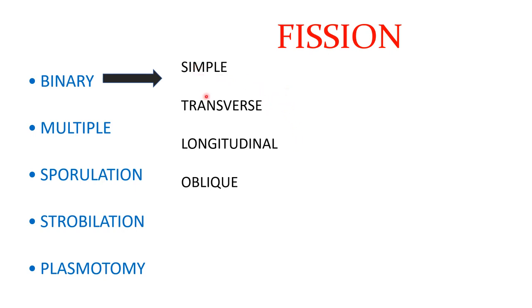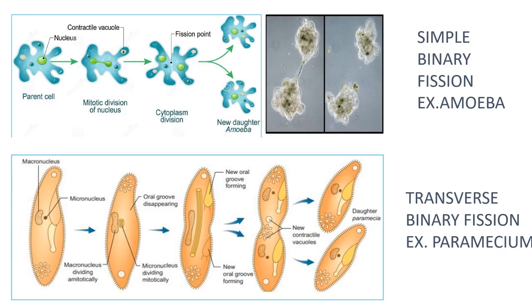The four main types of binary fission are: simple binary fission, transverse binary fission, longitudinal binary fission, and oblique binary fission.